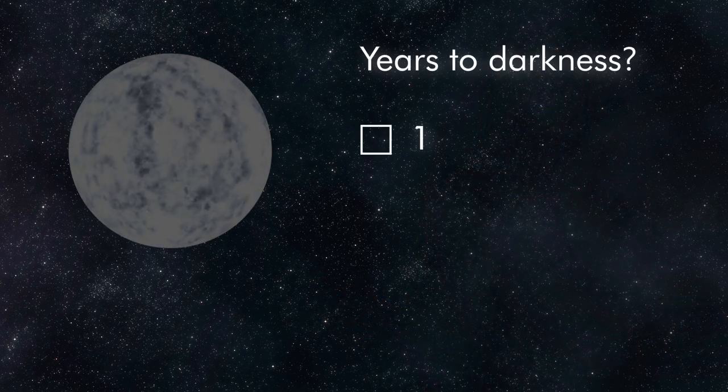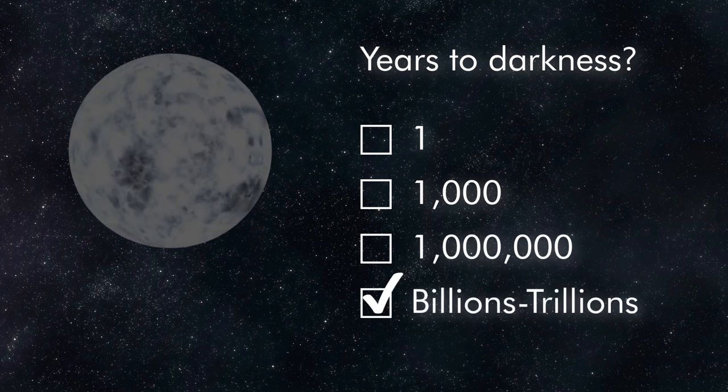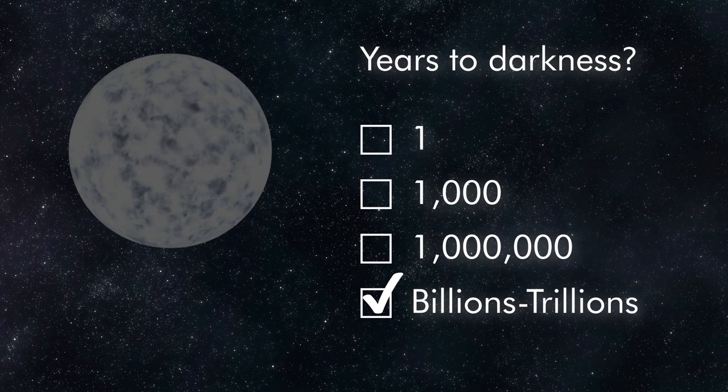As the years pass, white dwarfs cool down and begin to dim. After all, space is very cold, close to absolute zero. So how long do you think it will take the white dwarf to cool down to the point that it goes dark? One year? A thousand years? A million years? It's believed it will take trillions of years for white dwarfs to stop glowing. That's longer than the current age of the universe.